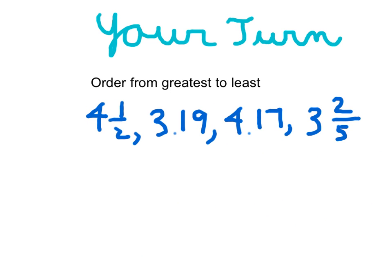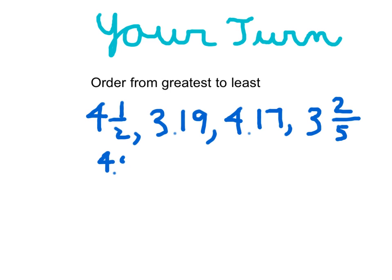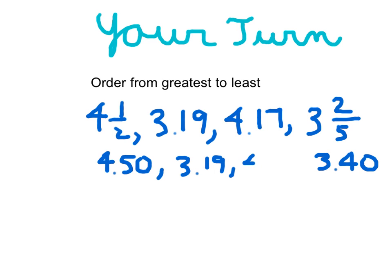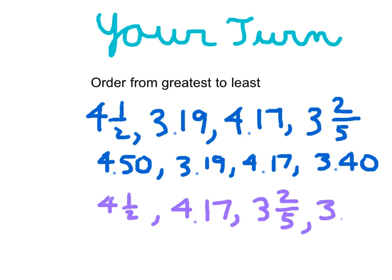It's your turn. This says to order from greatest to least. Please hit pause. Continuing from there, we know that 4 and 1 half is equal to 4.5, and 3 and 2 fifths is equal to 3.4. Sometimes you like to put that 0 — it's okay — that way we have the same number of decimal places. Then you would put them back in order from greatest to least. Did you write 4 and 1 half? Did you remember to put it into a mixed number? Next you would write 4.17, then 3 and 2 fifths as a mixed number, and finally 3.19.